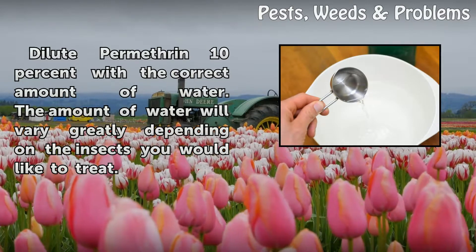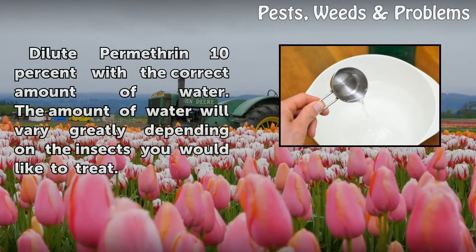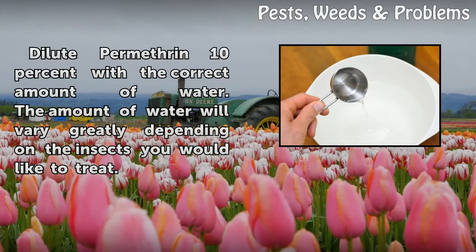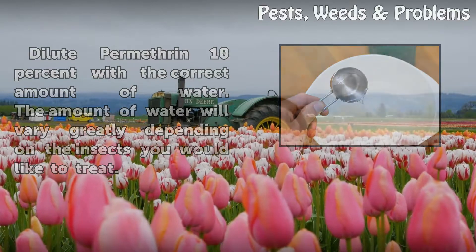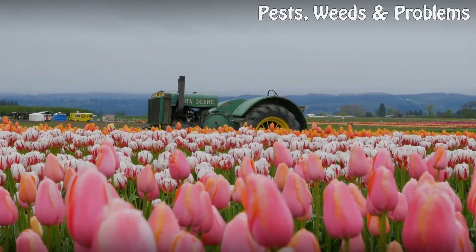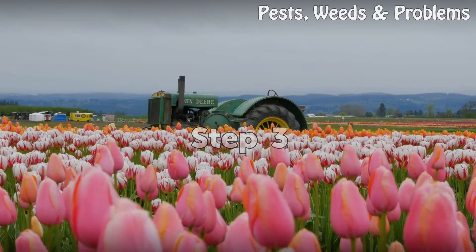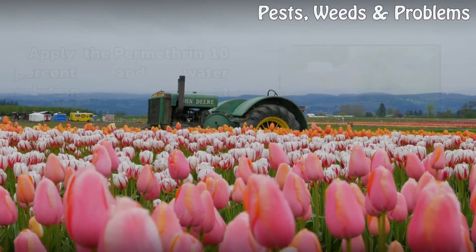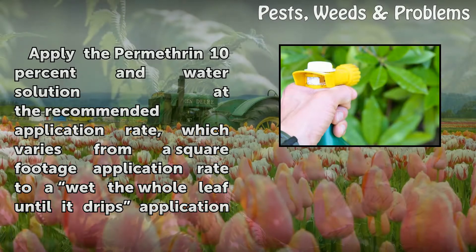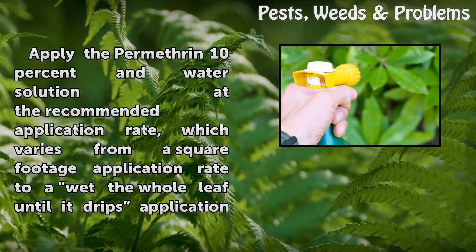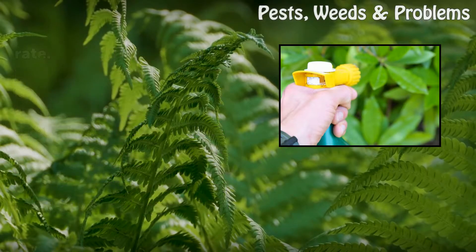Step 2: Dilute Permethrin 10% with the correct amount of water. The amount of water will vary greatly depending on the insects you would like to treat. Step 3: Apply the Permethrin 10% in water solution at the recommended application rate, which varies from a square footage application rate to a wet-the-whole-leaf-until-it-drips application rate.